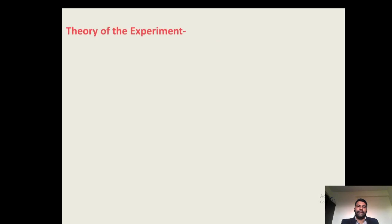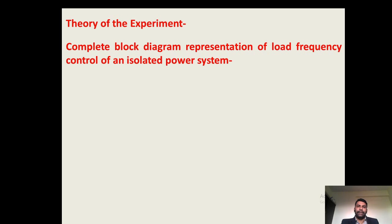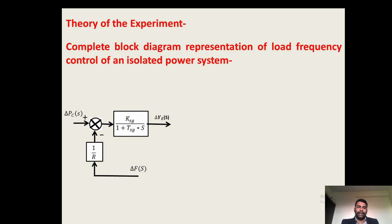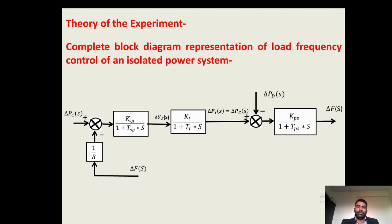We will start with the theory part of the experiment, for which we will require the complete block diagram representation of load frequency control of an isolated power system. This is the mathematical model of the speed governor system. The output of the speed governor system is connected to the input of the turbine system. The output of the turbine system is connected to the input of the generator load system. The frequency response signal is fed back to the speed changer setting.